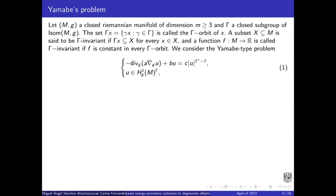Minus divergence of A times nabla u, plus bu, equal to c times u^(2*+2).